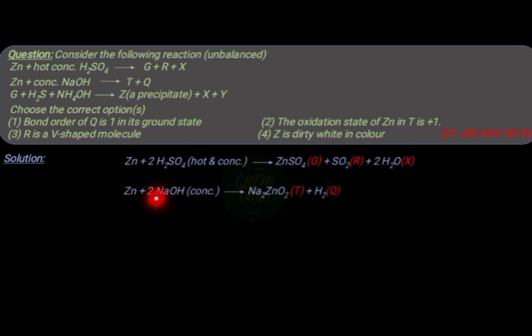The second equation is the reaction between zinc and concentrated sodium hydroxide, which gives sodium zincate and hydrogen as products. For balancing, add 2 before NaOH.